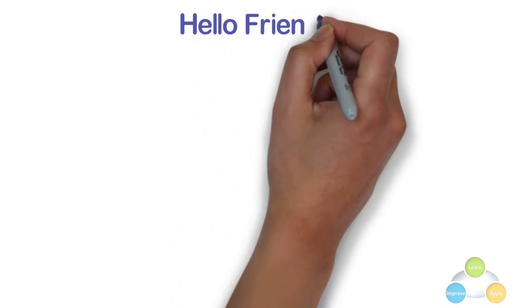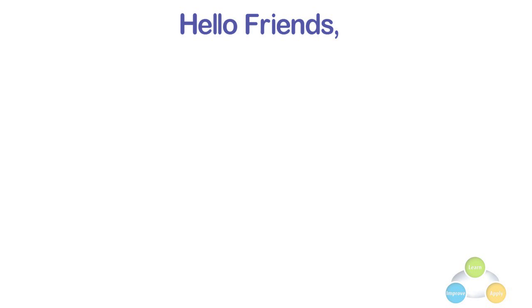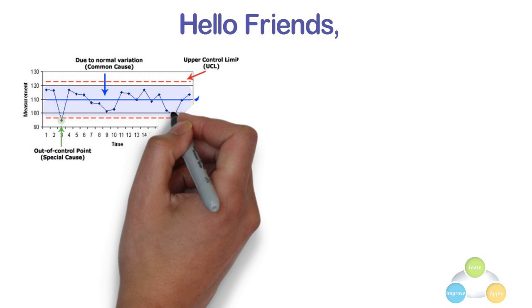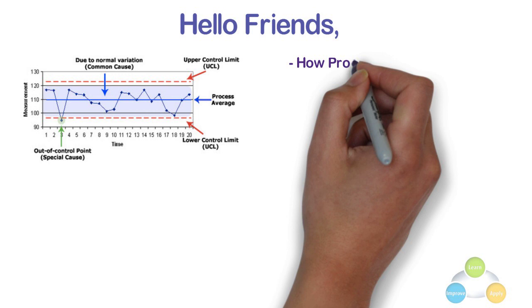Hello friends, it is very necessary to know basic concepts before starting the Six Sigma study. I already covered some of them. In this video, I am going to explain control chart which is very important and used everywhere in any kind of processes to study how a process changes over the period of time.